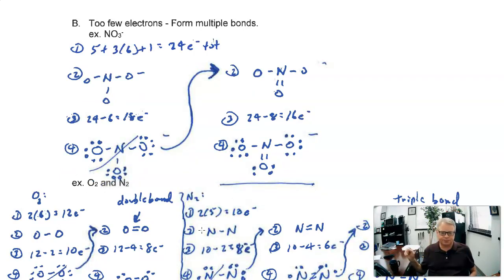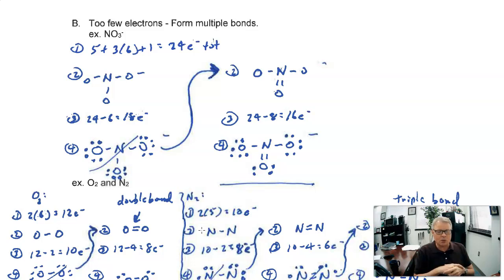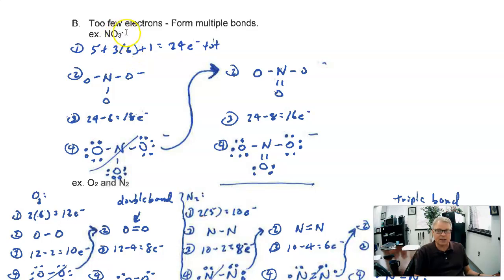So what do you do if you don't have enough electrons to go around? That's where you try to form multiple bonds. A great example is the nitrate polyatomic ion, NO3 with a minus charge. First thing we do: count the number of electrons available. Nitrogen is in group 15, so that gives us 5. We've got 3 oxygens each in group 16, so 3 times 6 is 18. The negative charge means there's one extra electron, so we add one. That gives us 24 electrons total to work with.